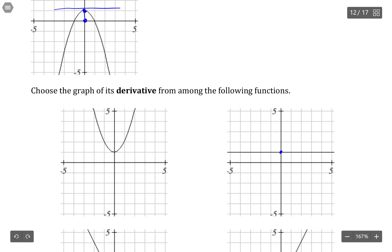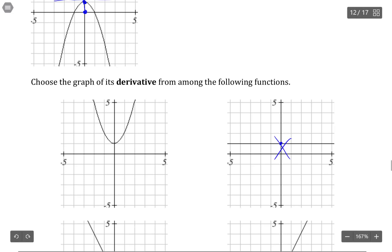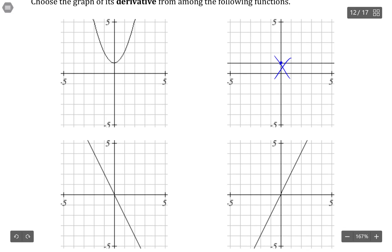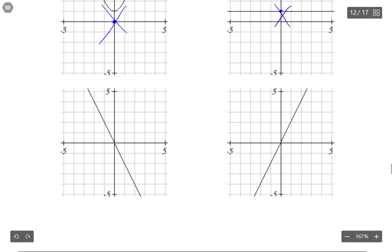So this function is not passing through the x-axis at that point, so that can't be it. This one's not passing, doesn't have a zero at the origin, so that can't be it. But that leaves us these two options here.